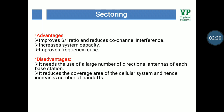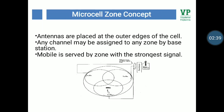Advantages of sectoring are: it improves signal-to-interference ratio, reduces co-channel interference, increases system capacity, and improves frequency reuse. Disadvantages of sectoring are: it requires the use of a large number of directional antennas at each base station, and it reduces the coverage area of the cellular system, hence increasing the number of handoffs.